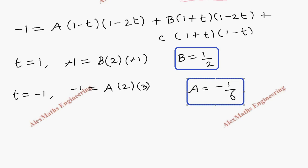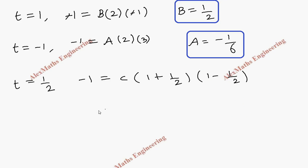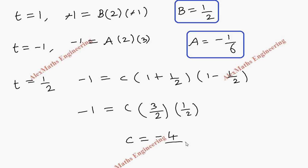The other value to take for t is t equal to 1/2. The A term has factor (1 minus 2t), so it becomes 0, and the B term also becomes 0. We are left with C into (1 plus 1/2) into (1 minus 1/2). So minus 1 equals C into (3/2) into (1/2), giving minus 1 equals 3C/4. Therefore the value of C is minus 4 by 3.